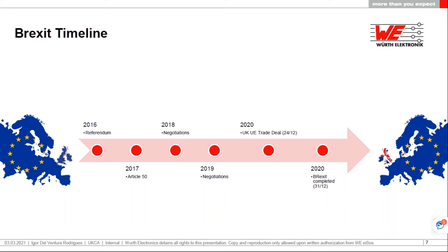In 2016 we had the referendum. In 2017 Article 50 was published, which is our exit strategy for leaving the European Union. The UK government then had to consider trade, as the EU is one of our largest trading partners. Negotiations started in 2018 and 2019. In 2020 we managed to strike a deal with Europe before the deadline, and Brexit was completed by the 31st of December 2020. We didn't actually leave Europe until around the 19th of January 2021.